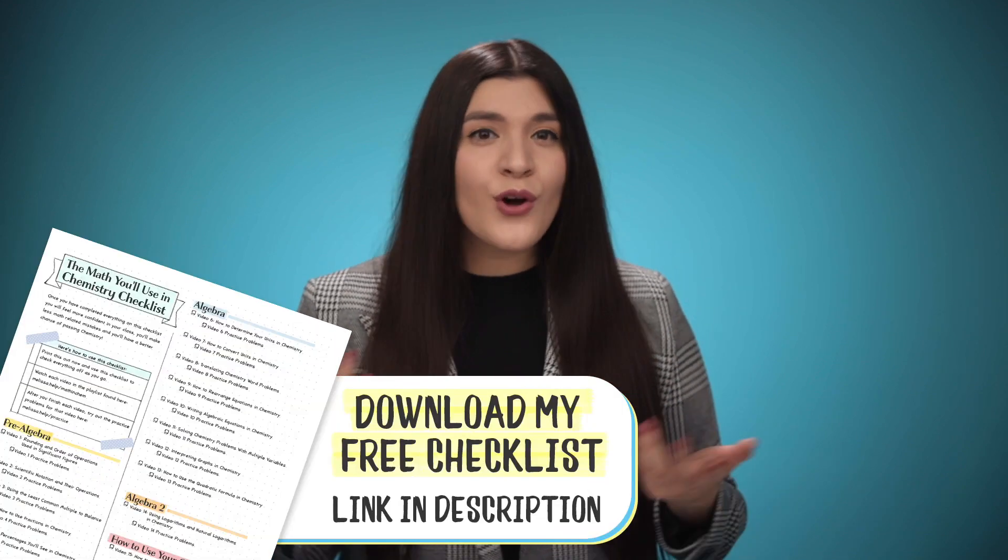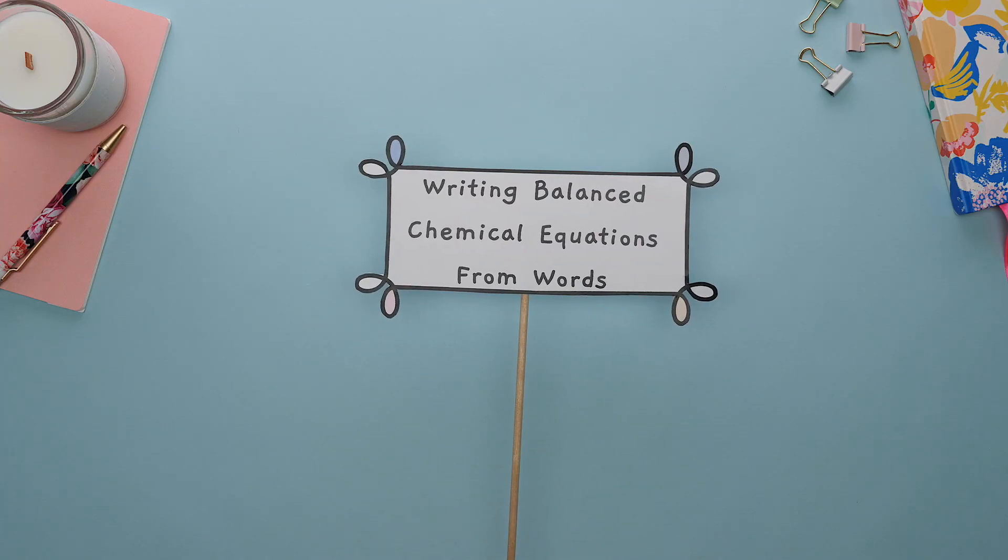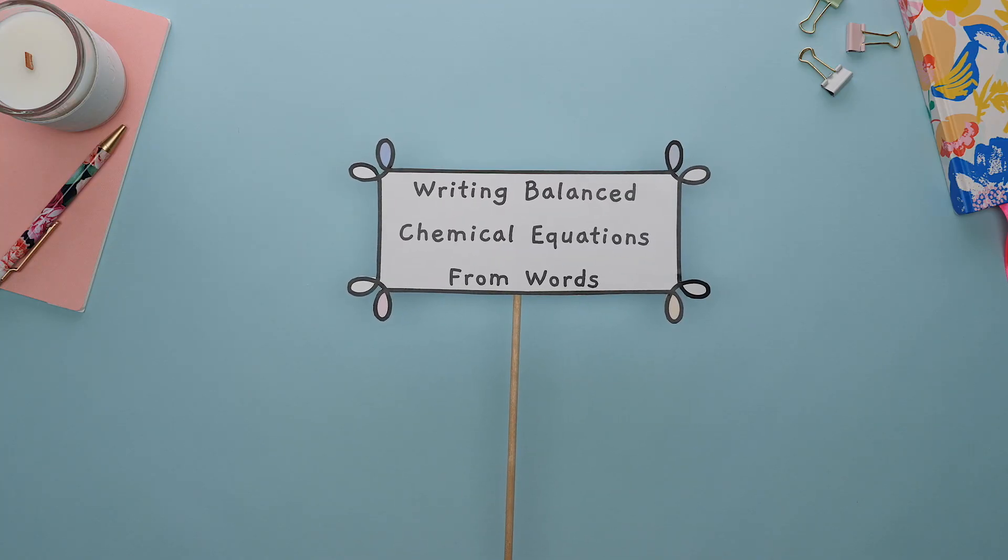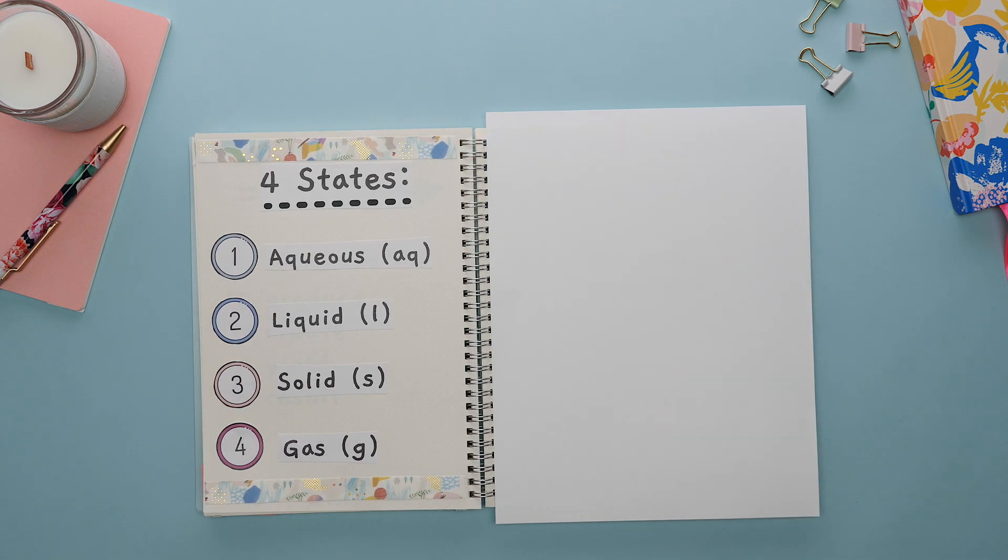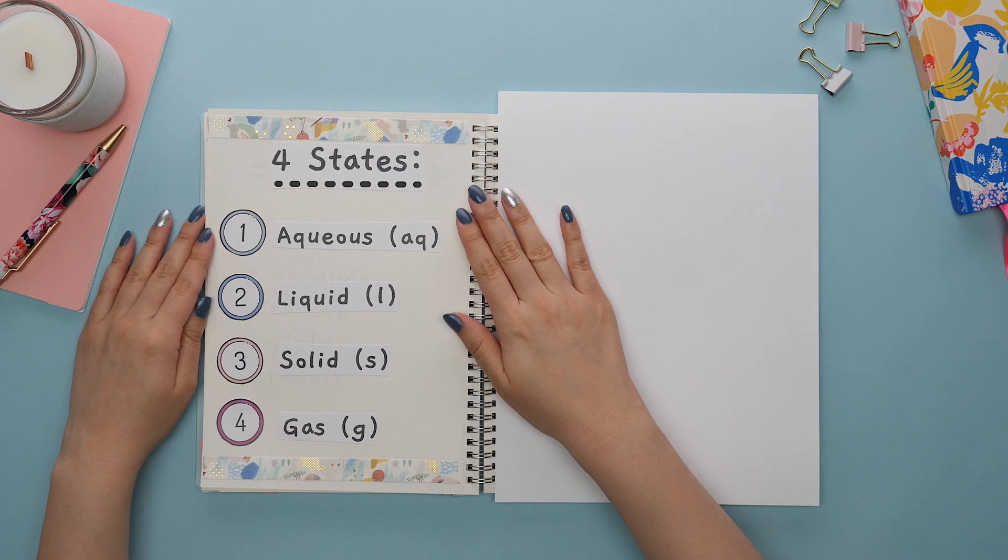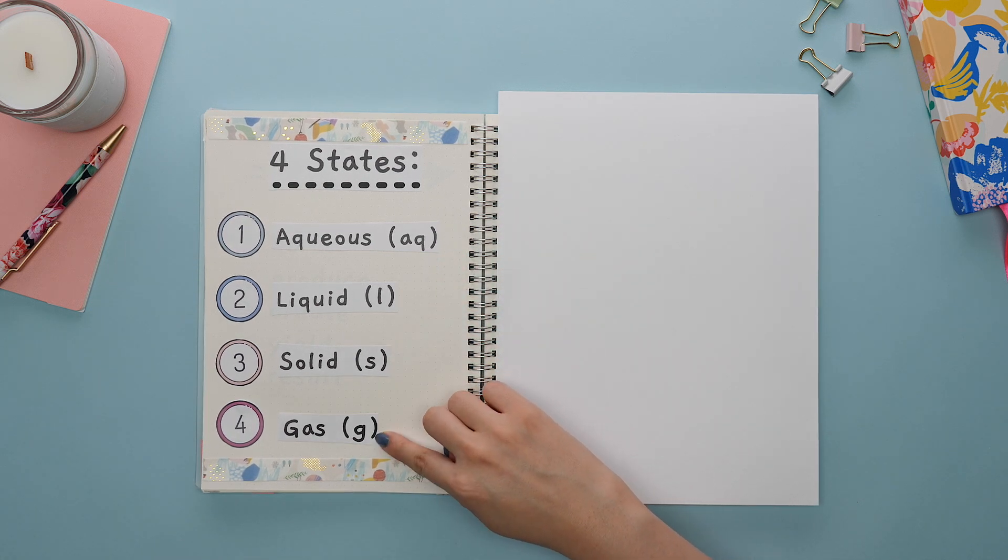Of course every chemistry topic has its own keywords or terms to know, so let's go over some of the most common word problems in chemistry. Starting with writing a balanced chemical equation from just words. Here are some keywords to know. There are four states you will see in a chemical equation: aqueous, liquid, solid, and a gas.